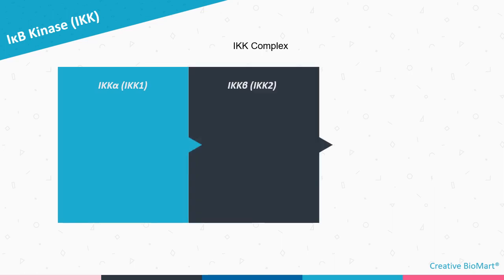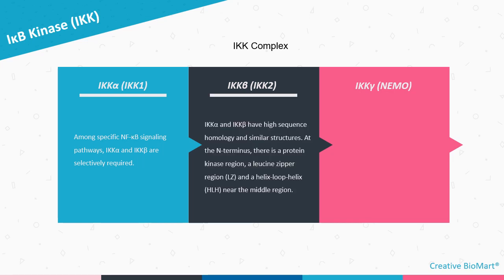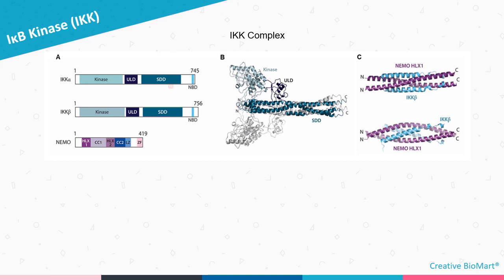The IKK complex comprises three subunits: IKK-alpha, IKK-beta, and the regulatory subunit IKK-gamma (NEMO). Among specific NF-Kappa-B signaling pathways, IKK-alpha and IKK-beta are selectively required. They have high sequence homology and similar structures. At the N-terminus there is a protein kinase region, a leucine-zipper region, and a helix-loop-helix region near the middle. NEMO includes a large coiled-coil section and a leucine-zipper region near the C-terminus. The figure represents the structures of the IKK complex: Figure A shows domain organizations, Figure B shows the crystal structure of the IKK-beta dimer, and Figure C shows the crystal structure of IKK-beta NBD in complex with the N-terminal kinase binding domain of NEMO.